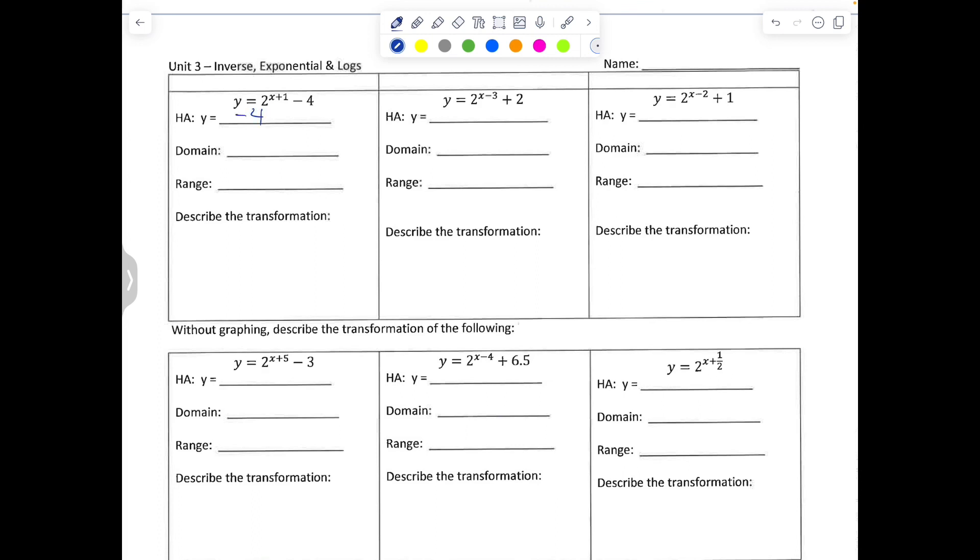Okay, welcome back. I'm just going to kind of write down the answers. So the first one, the next one, the horizontal asymptote is 2. The domain is all real numbers. The range is y is greater than 2. And the transformation would be right 3, up 2.